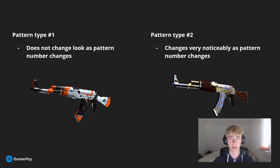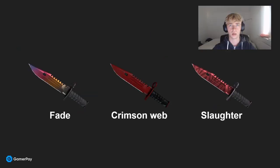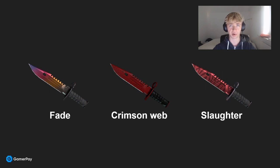An example of a skin where the pattern number has a great impact on how the skin looks could be the Case Hardened. Other skins like Fade, Crimson Web, and Slaughter are also skins where the pattern number affects the look of the skin to the point where the price can change. However, the skin where the pattern has the highest importance by far is the Case Hardened, which is what we are going to be focusing on in this video.